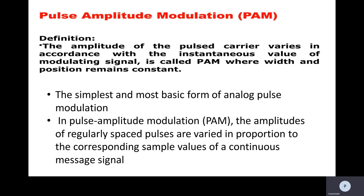In pulse amplitude modulation, the amplitude of a pulsed carrier varies in respect to the instantaneous values of the modulating signal, whereas the remaining parameters — width and position — remain constant. It is the simplest and most basic form of analog pulse modulation.